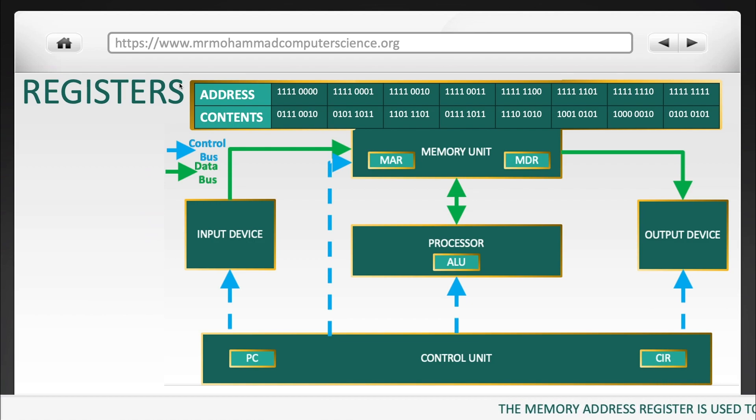The memory address register is used to store the addresses in memory for the data. The memory data register, as you can probably guess, is used to store the data itself. But how do they work together?